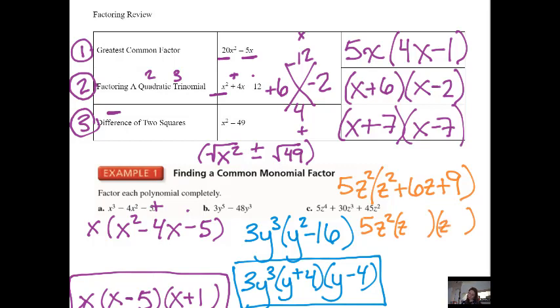The first term in each binomial is z. Now I'm looking for two numbers that multiply to 9 and add to 6, and that is plus 3 plus 3. I do not have a difference of squares, but I can simplify because I have the same binomial being multiplied twice. So I will rewrite this as 5z squared times z plus 3 squared.